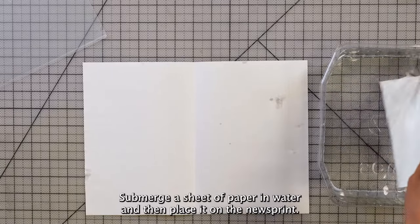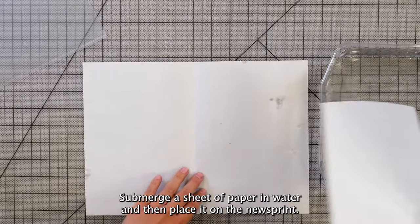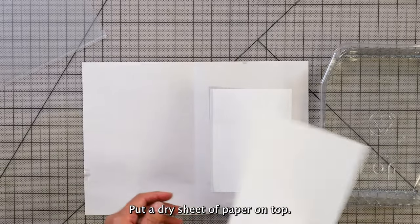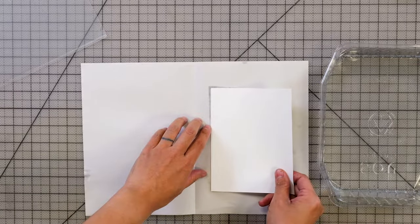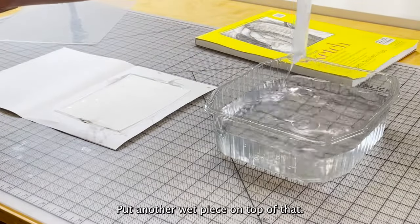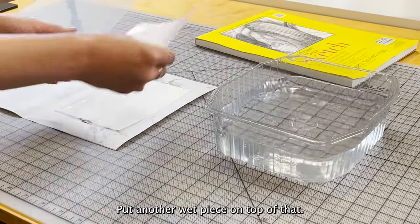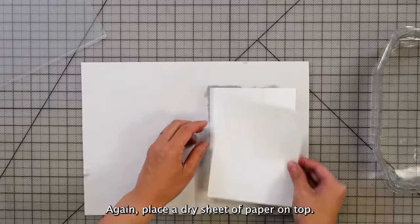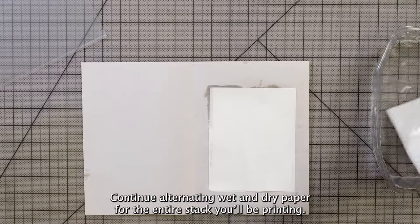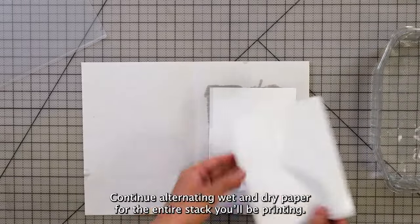Submerge a sheet of paper in water and then place it on the newsprint. Put a dry sheet of paper on top. Put another wet piece on top of that. Again, place a dry sheet of paper on top. Continue alternating wet and dry paper for the entire stack you'll be printing.